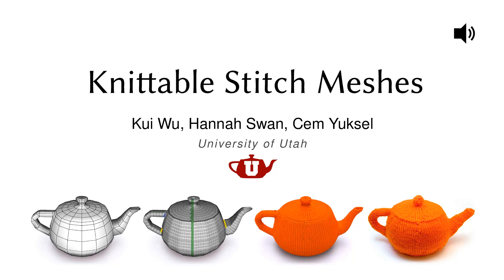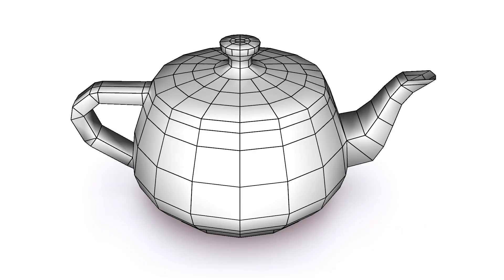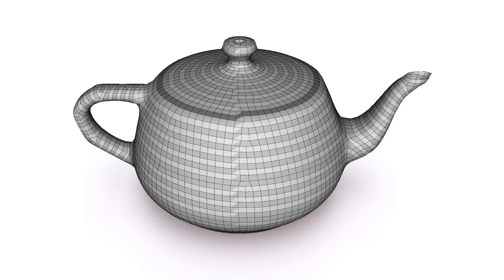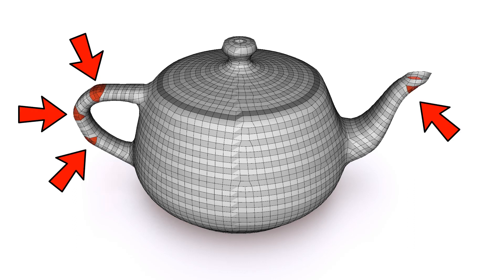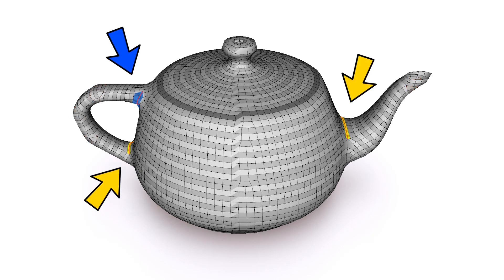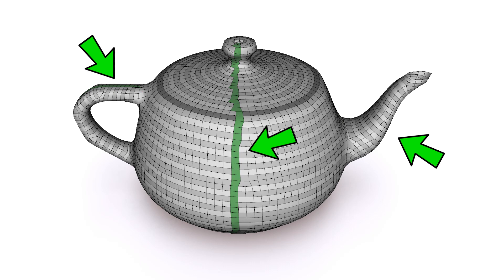We introduce knitable stitch meshes for designing complex knitable structures. We begin with an input mesh model and convert it to a knitable stitch mesh that represents the yarn-level model. The knitable stitch mesh contains new representations for handling short rows, different types of mismatched knitting directions, and shift paths that connect the yarn pieces of neighboring rows.